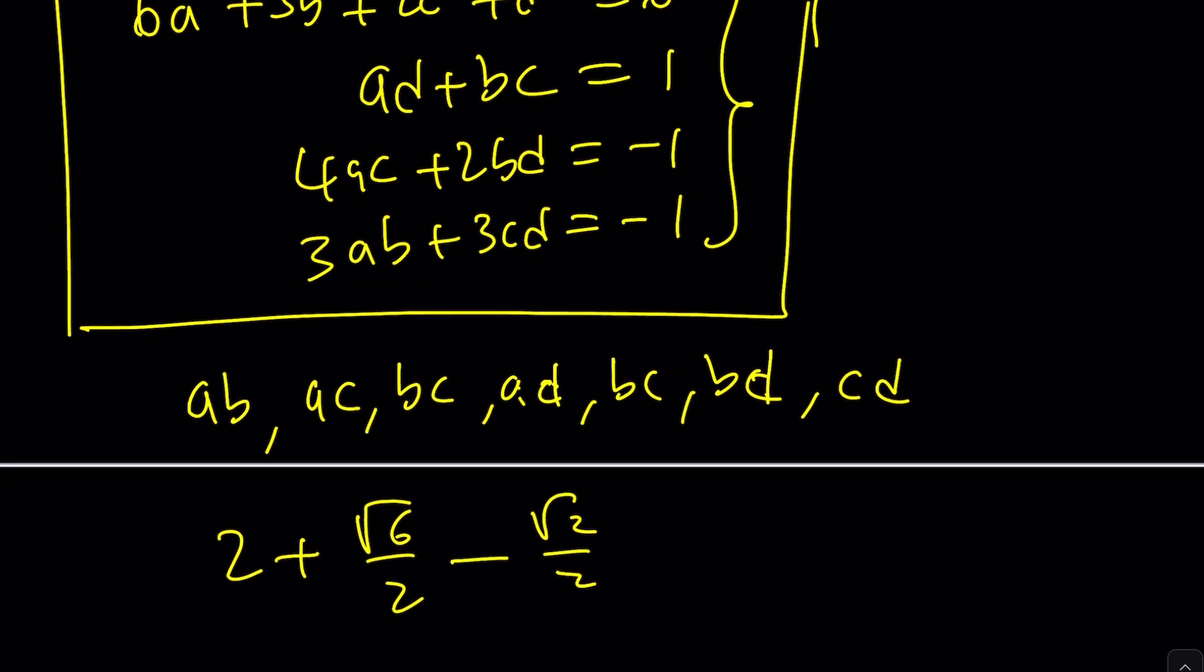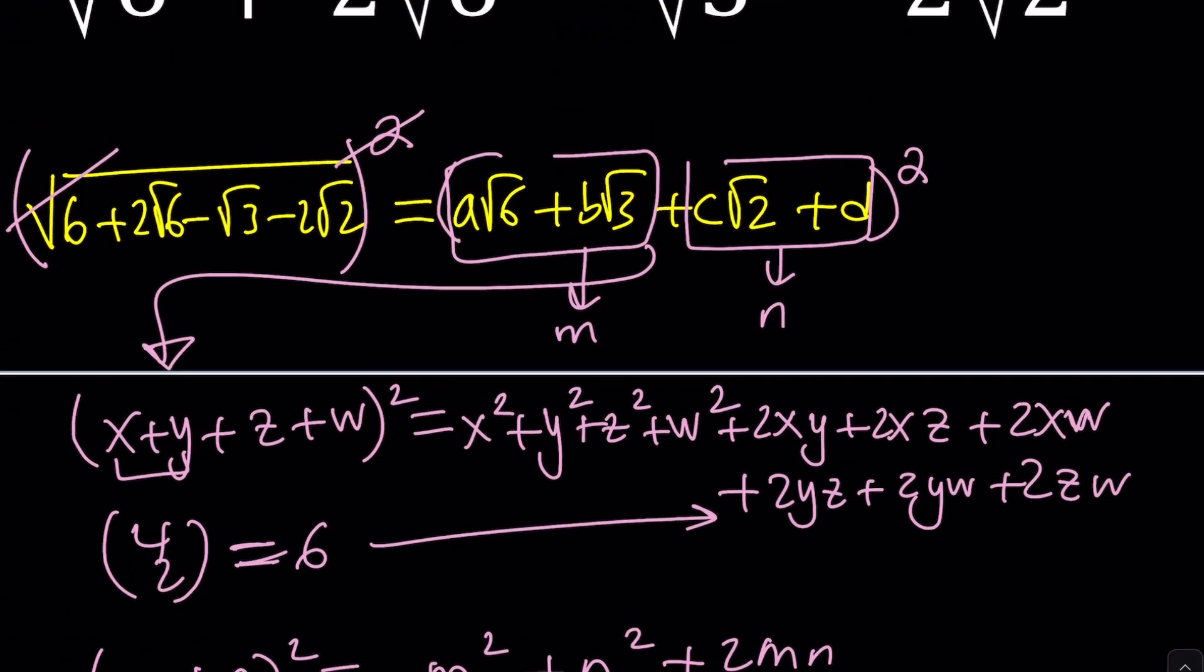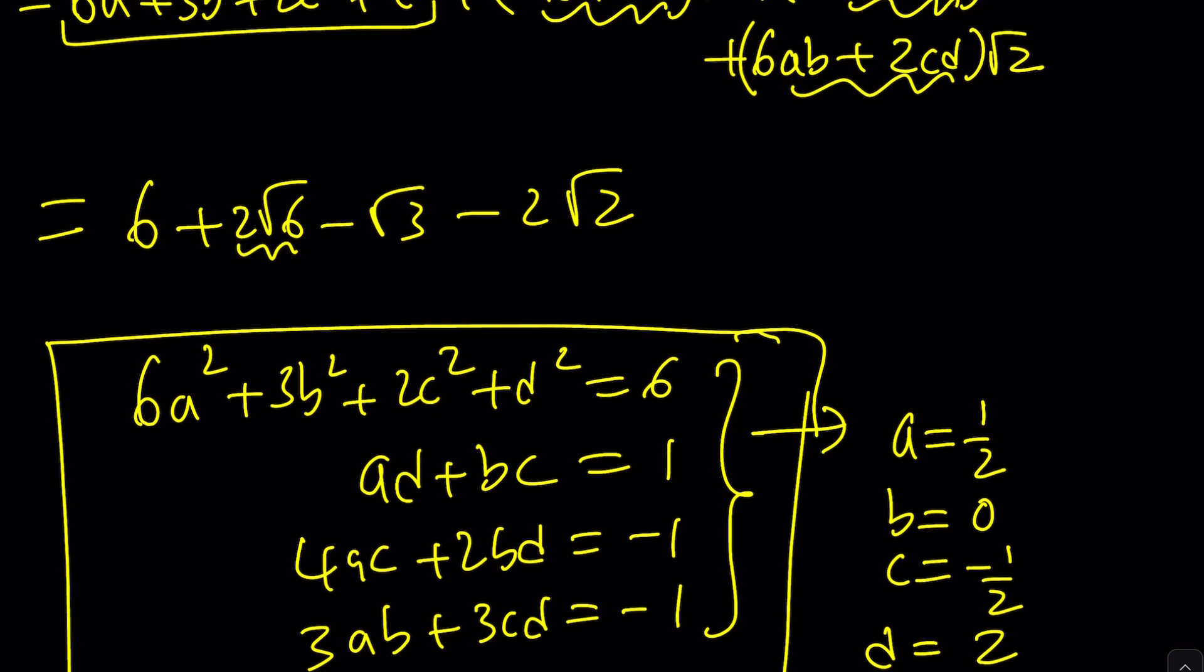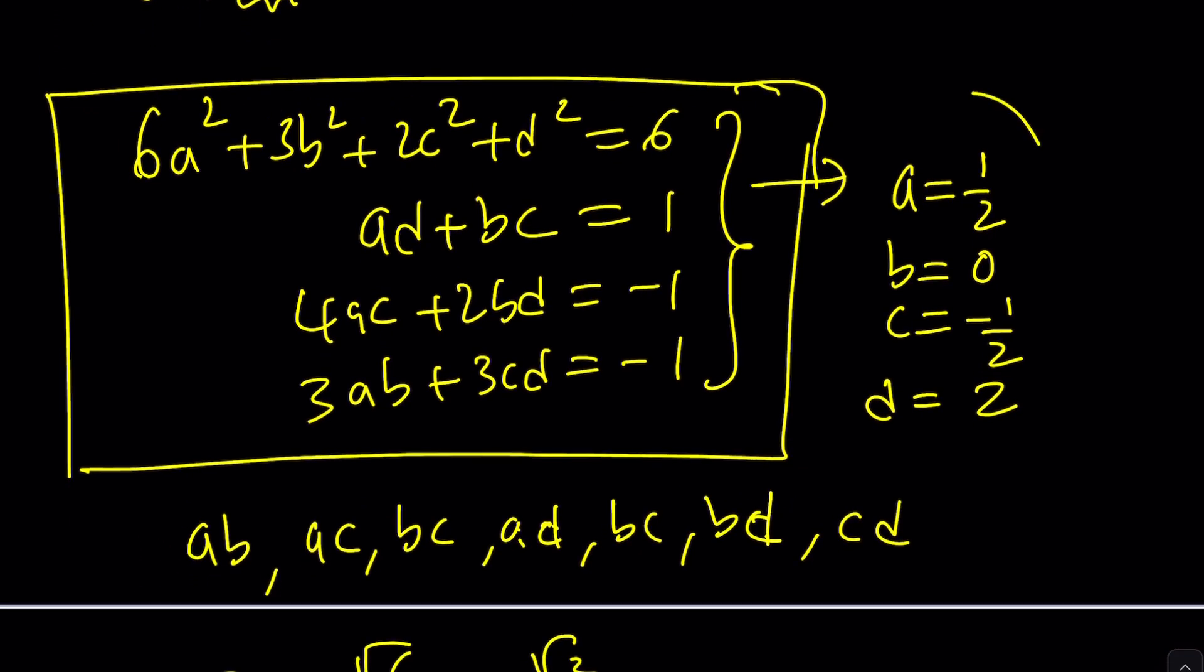From here we can safely say that a is equal to 1 half, b is equal to 0, c is equal to negative 1 half, and d is equal to 2. Because remember, a is the coefficient of root 6, b is the coefficient of root 3, and c is the coefficient of root 2. These are our numbers that come from the solution of this system. But how do you solve this system? That's a very good question.